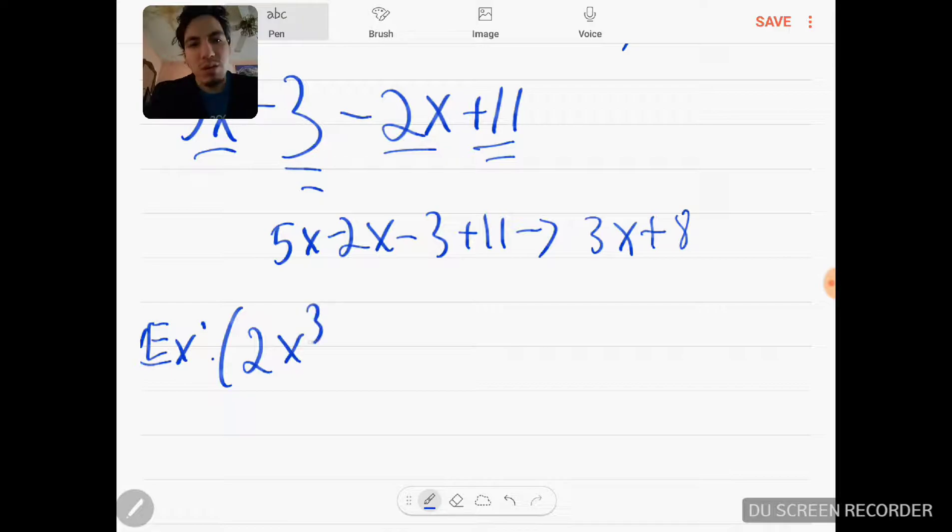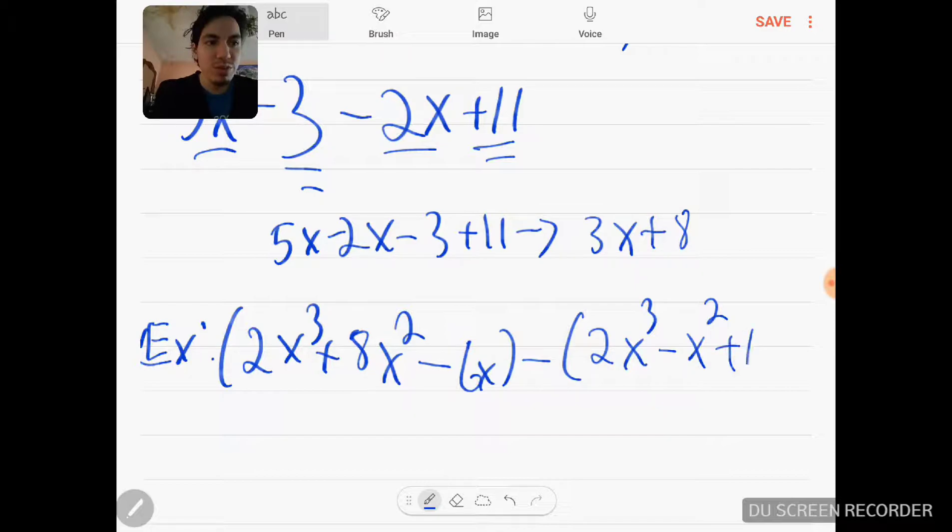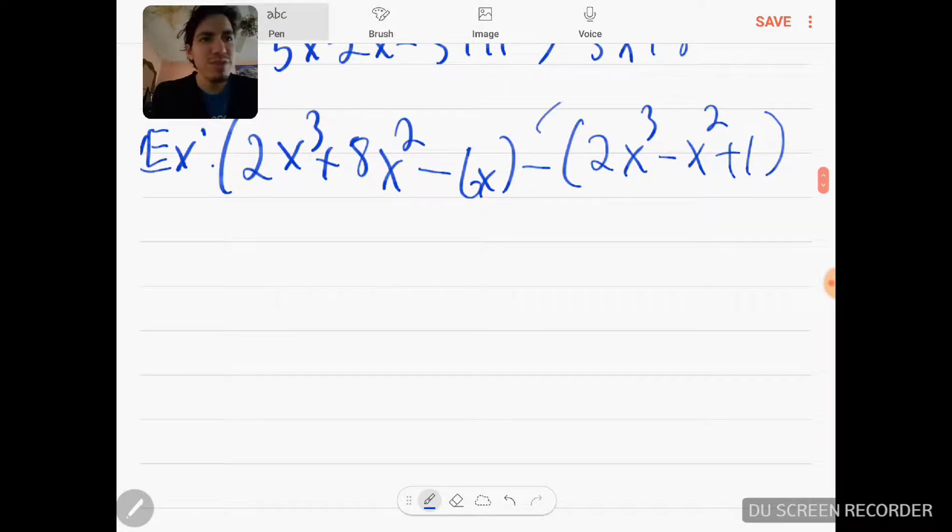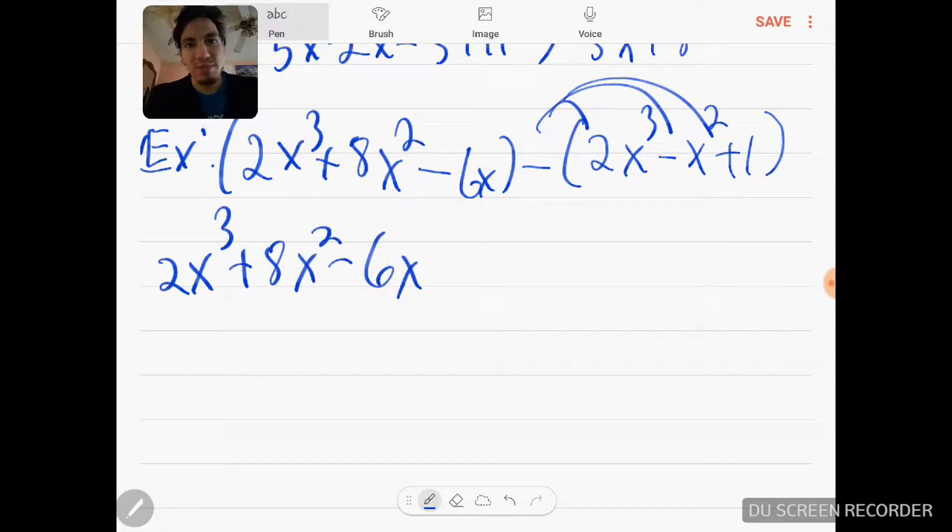Now what happens if I have (2x³ + 8x² - 6x) take away (2x³ - x² + 1)? You distribute the negative sign to both terms. That's the first thing you do: worry about the sign first, and then you worry about combining later. So the first part I leave the same—it's not affected by the minus sign, it's the second term.